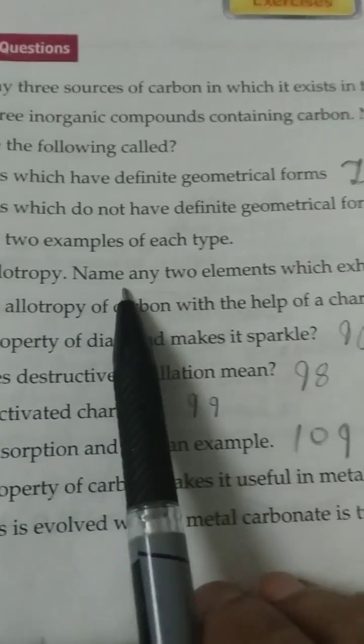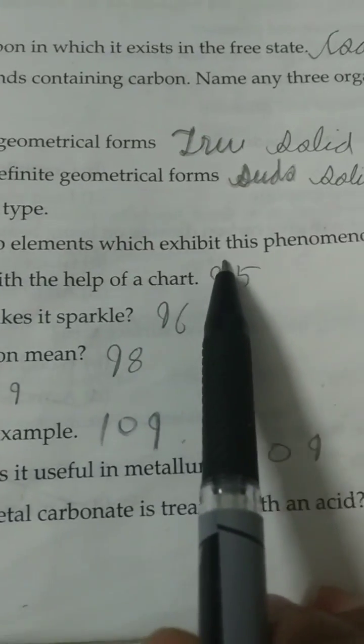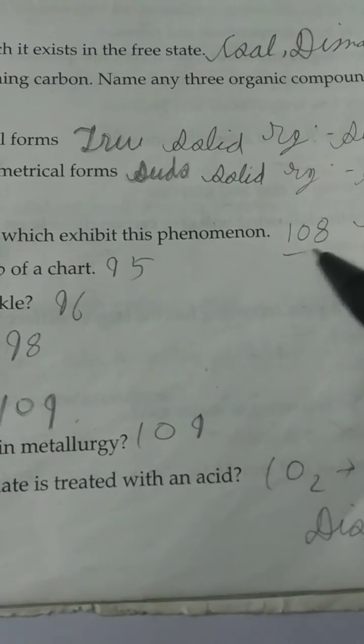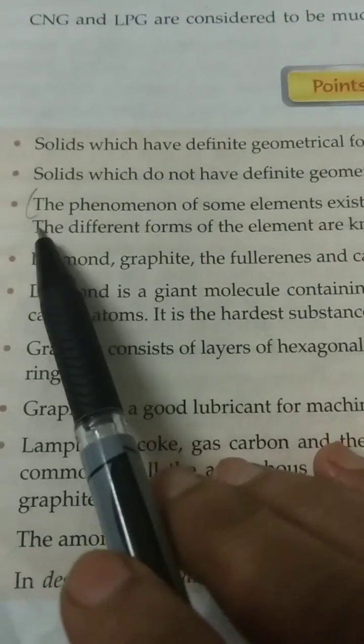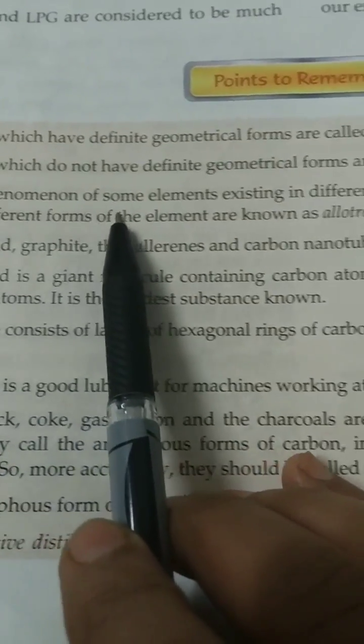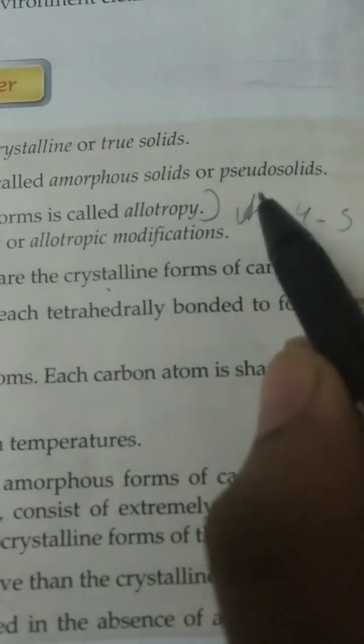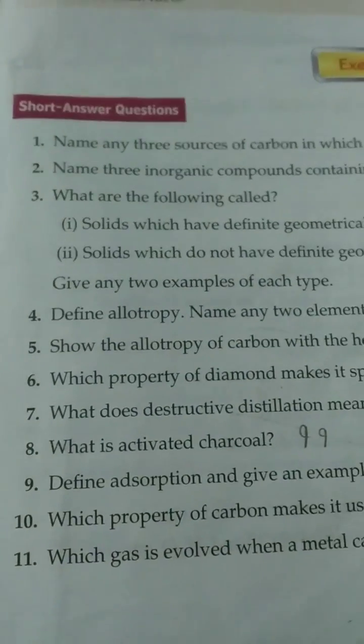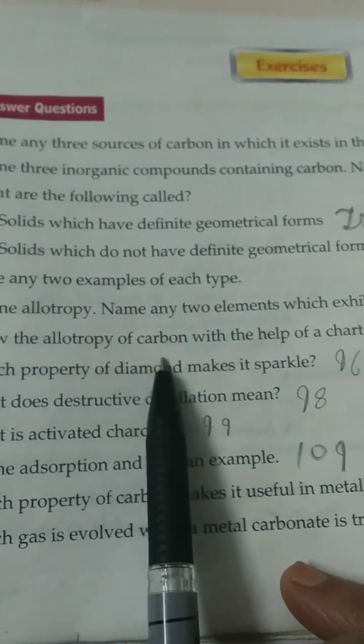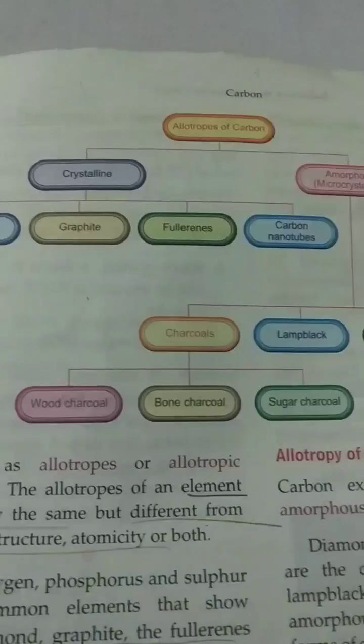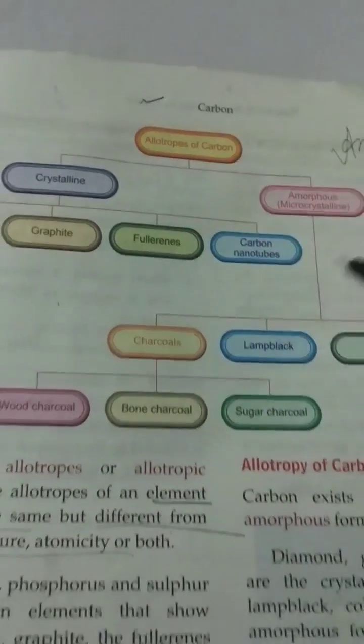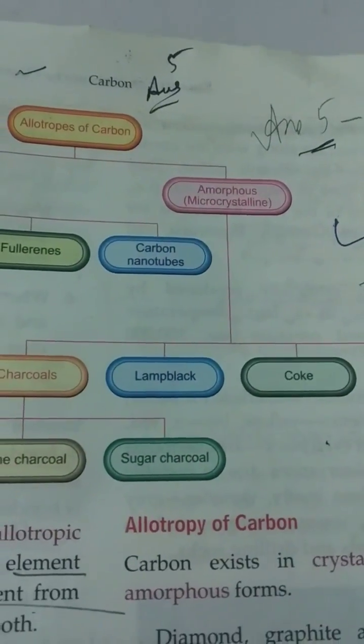Fourth, define allotropy. Name any 2 elements which exhibit this phenomenon. See page 108, third point, points to remember. The phenomenon of some element existing in different forms is called allotropy. It is answer number 4. And examples, you will write carbon, oxygen. Fifth, show the allotropy of carbon with the help of a chart. See page number 95. This one you will draw. It is answer number 5.